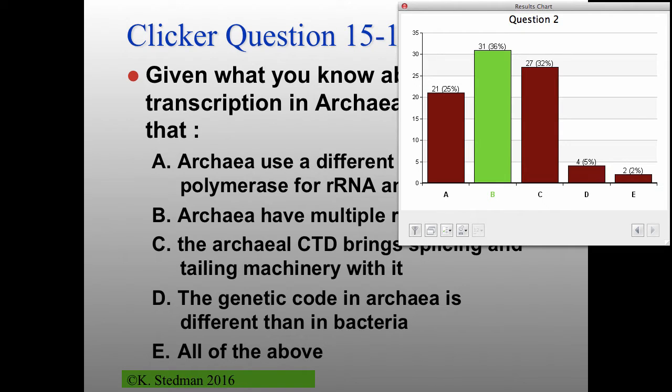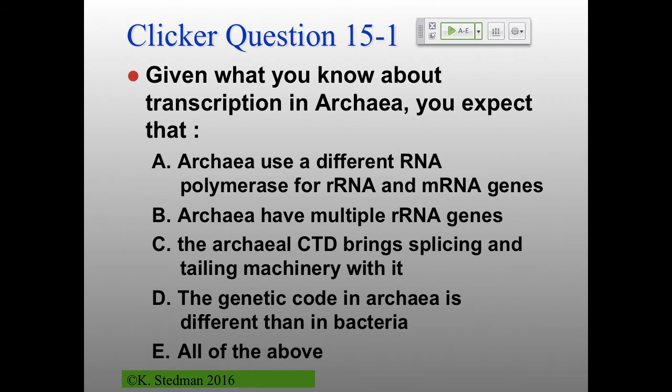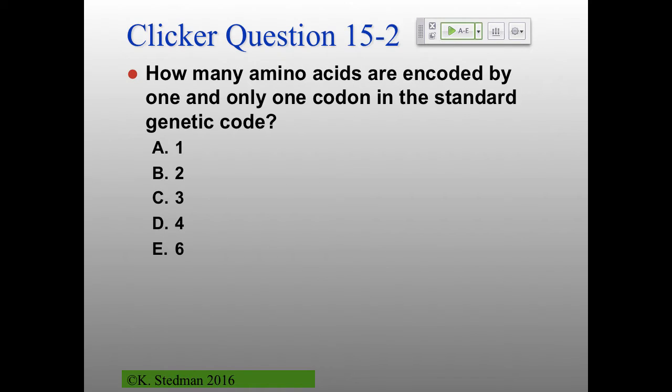Hopefully this next one will be more straightforward. How many amino acids are encoded by one and only one codon in the standard genetic code — which we just found out is the same in bacteria and archaea? One, two, three, four, or six.